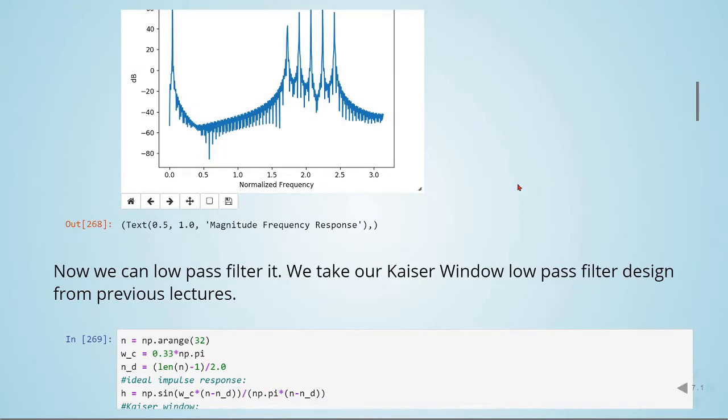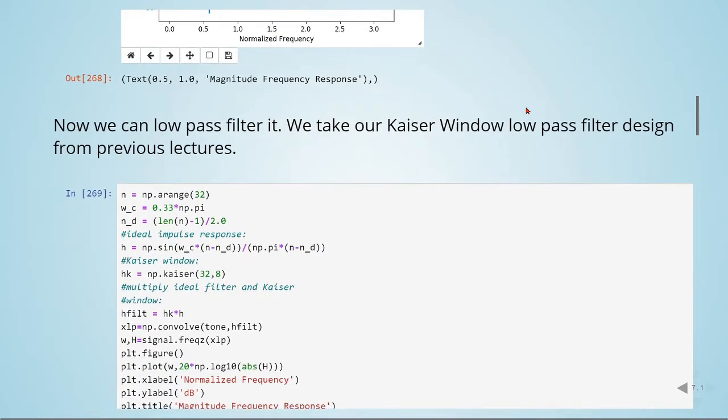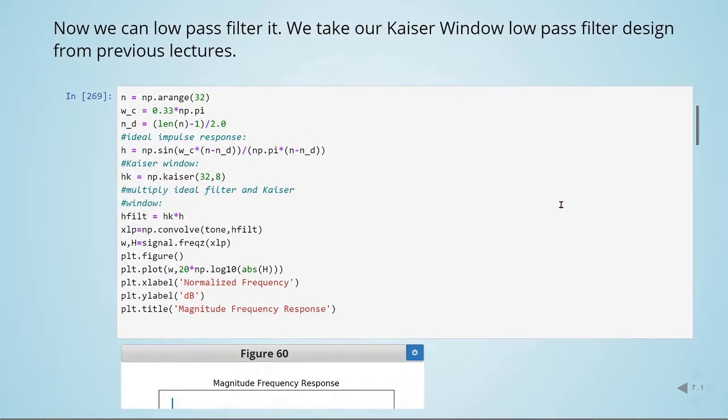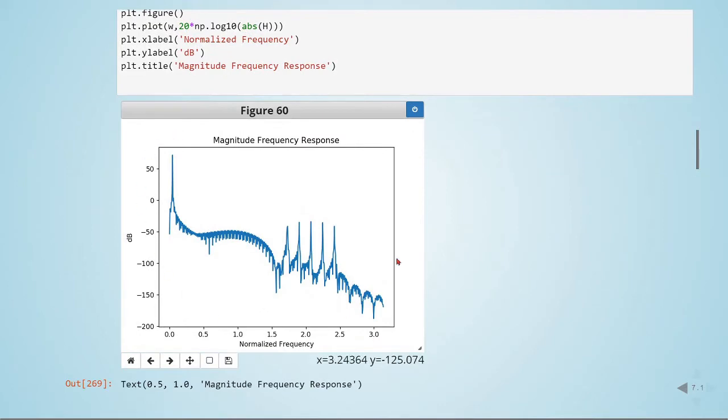We will low pass it and take our Kaiser window low pass with design length equals to 32. It's the same as what we did in the previous tutorial, and here now we have our filtered signal.